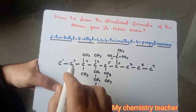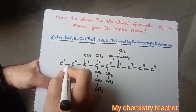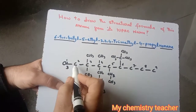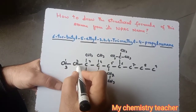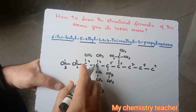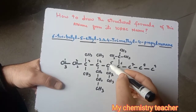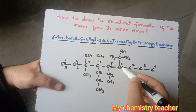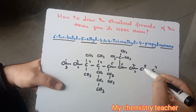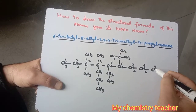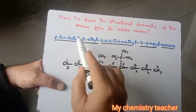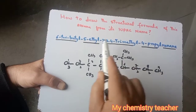Next, wherever carbon tetravalency is not complete, complete it using hydrogen. For example, carbon one shows one bond with another carbon, so it bonds with three hydrogens. A carbon showing two bonds bonds with two hydrogens. Where four bonds are already shown, no hydrogen is added. Three bonds shown means one hydrogen; two bonds means two hydrogens; one bond means three hydrogen atoms. This gives us the correct structural formula of this alkane.